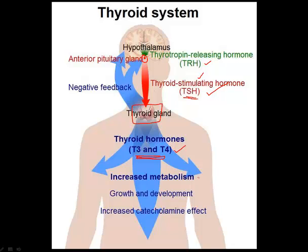The basic functions of T3 and T4 are increasing your metabolism, your growth and development, and also the catecholamine effect — meaning preparing your body for some physical activity: increasing your heart rate, your blood glucose, and preparing yourself for an adrenalin effect. Now, when the T3 and T4 levels go up, they give a negative feedback on your brain — that is your hypothalamus and your pituitary gland — stating that T3 and T4 levels are high, so you need not produce more thyroid stimulating hormone.